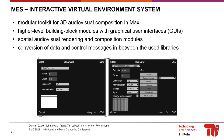To overcome these obstacles and simplify the creation of 3D audiovisual environments in Max, we developed IFES, a modular toolkit for 3D audiovisual composition in Max. It provides higher-level building block modules with graphical user interfaces for spatial audiovisual rendering and composition. It automates processes such as the conversion of data and control messages as well as parameterization between the libraries used.